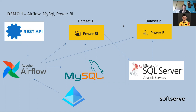First demo. I want to show you how Apache Airflow works. I took this solution from different projects and I'll show you how it works. What I will do: I take data via REST API, check the last date from this REST API from MySQL, and upload this data to MySQL. After that, if all is successful, I refresh the first dataset in Power BI, and after the first dataset is refreshed, I refresh the second dataset. But before that, Airflow will generate an access token for the Power BI REST API.